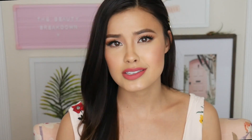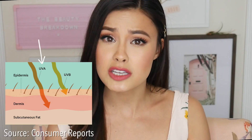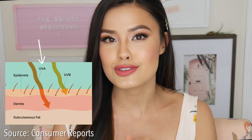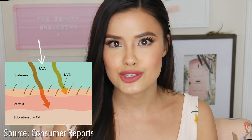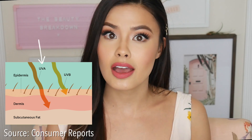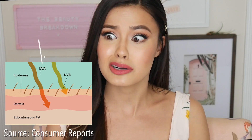UVA rays are just as damaging for the skin cells but in a different way. Since UVA rays penetrate more deeply into the skin, they're what causes photo aging — so that equals darkening of the skin as well as wrinkles and aging.